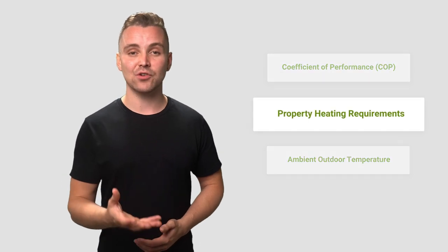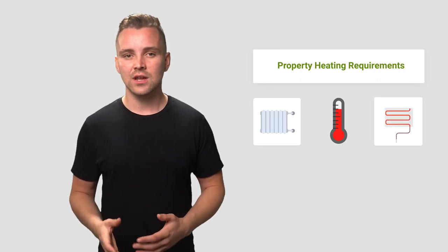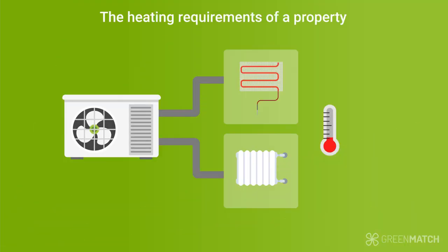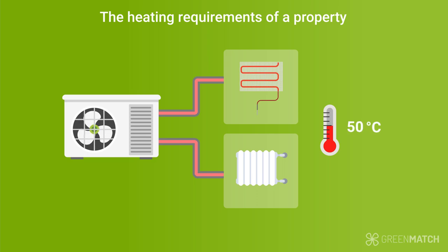Now let's talk about the heating requirements of a property. This is essentially the temperature the water in your radiators or underfloor heating needs to reach in order to heat your home effectively. The majority of air source heat pumps are at their most efficient when providing water at a temperature of 50 degrees within a central heating system. However, many UK homes with older, traditional radiators will have a heating requirement of at least 65 degrees, meaning a heat pump will need to work harder and its COP will go down.